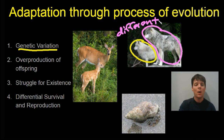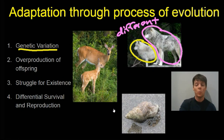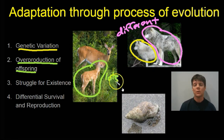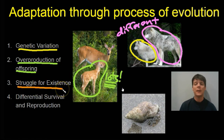The next component is the overproduction of offspring. This means that organisms will reproduce, producing many offspring — like the fawn we see circled here. If a species isn't doing this, the numbers of that species are likely going to be dropping, and this is a species which might be threatened or endangered.